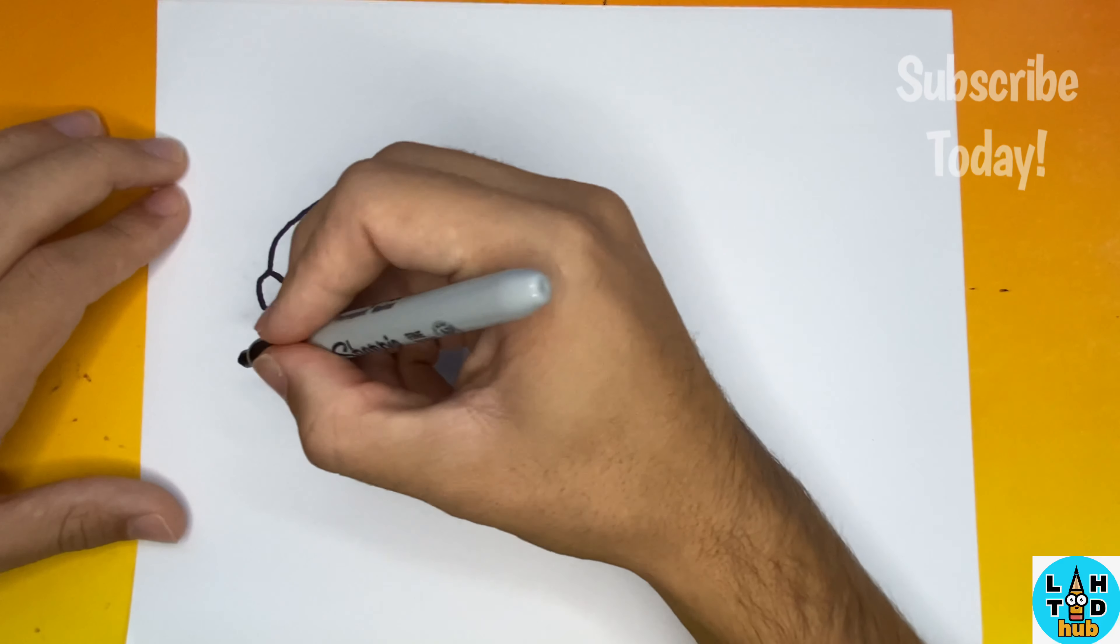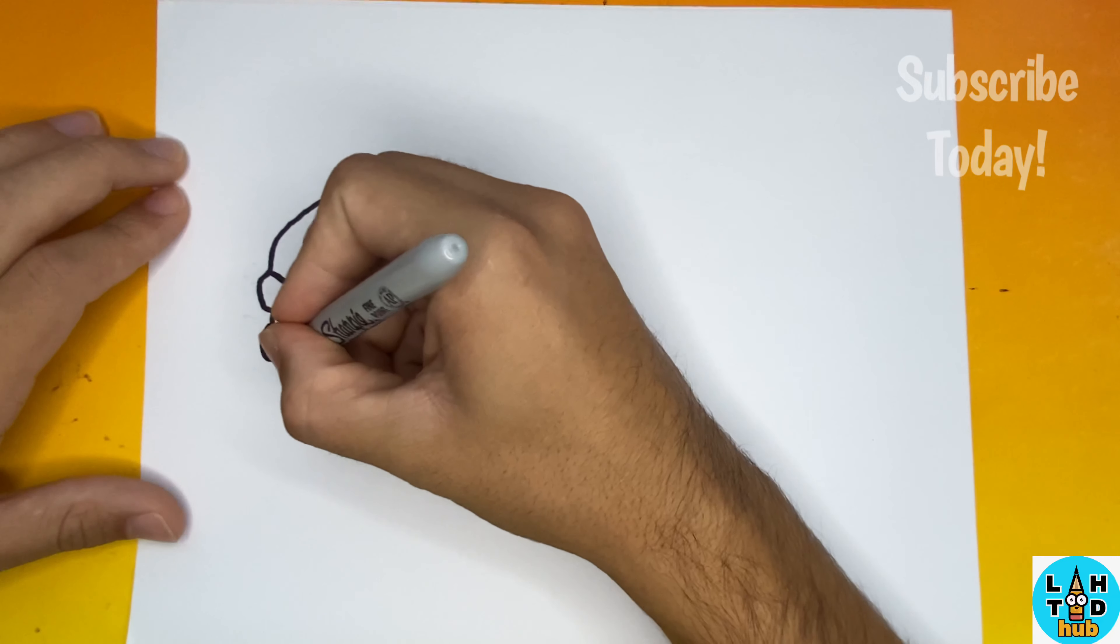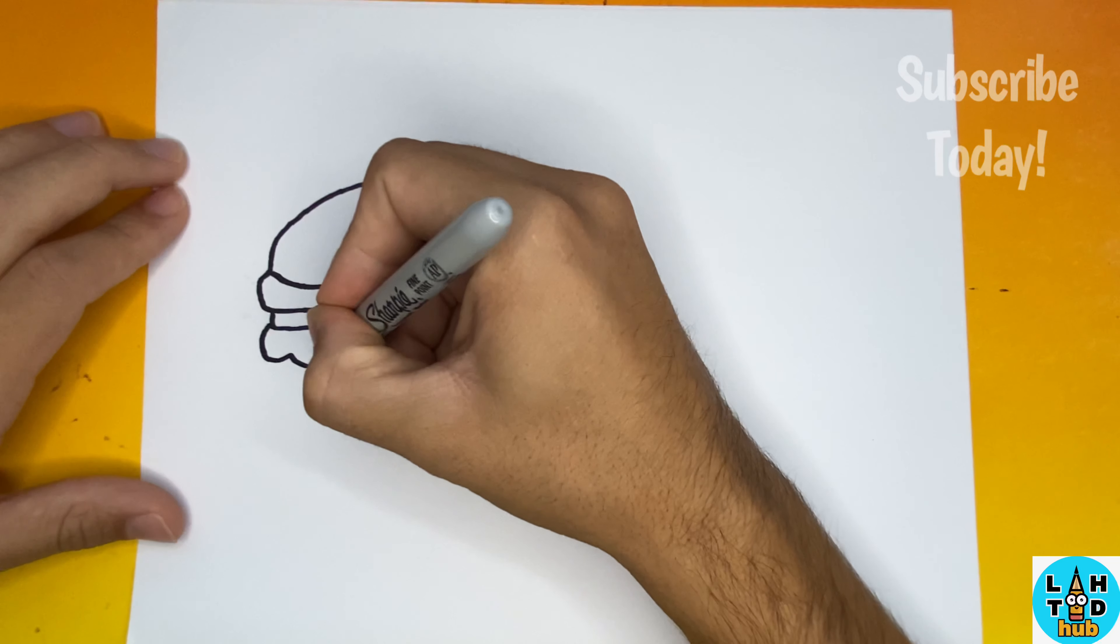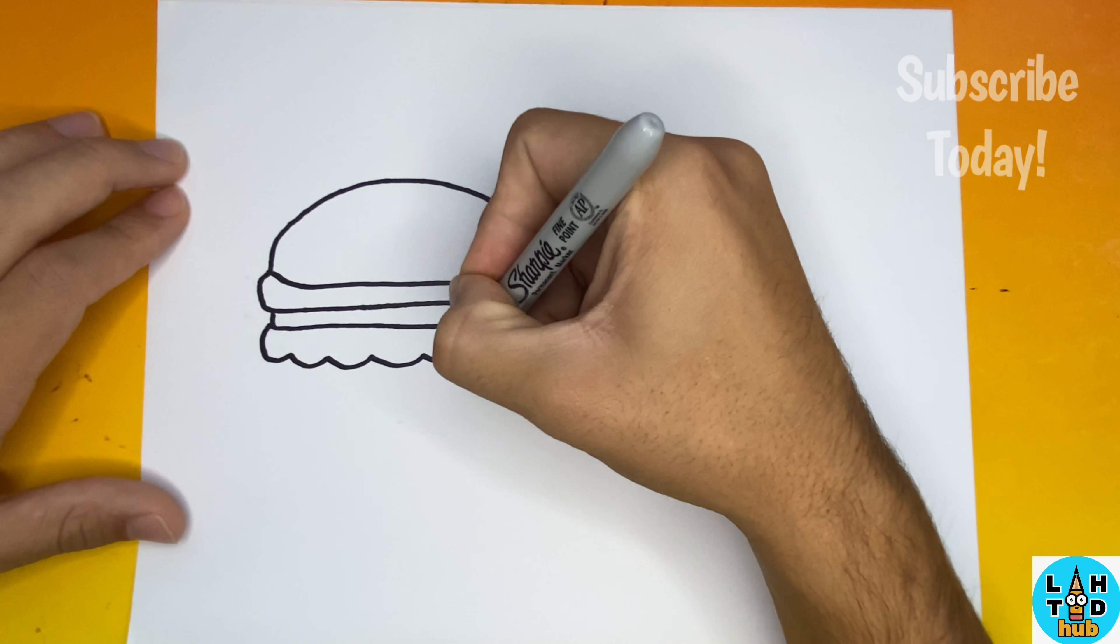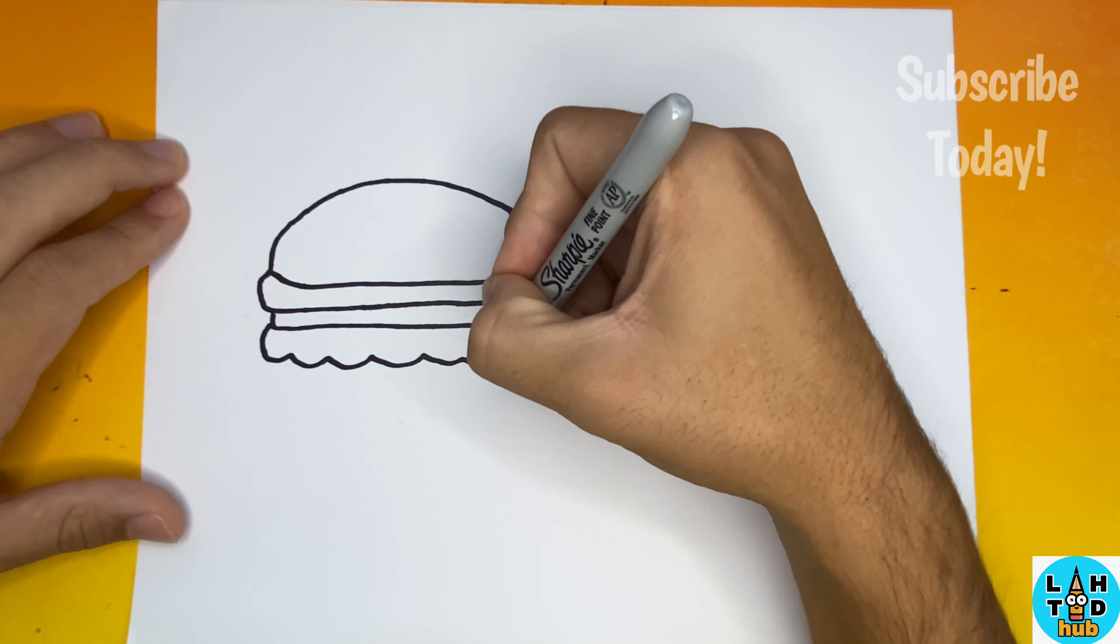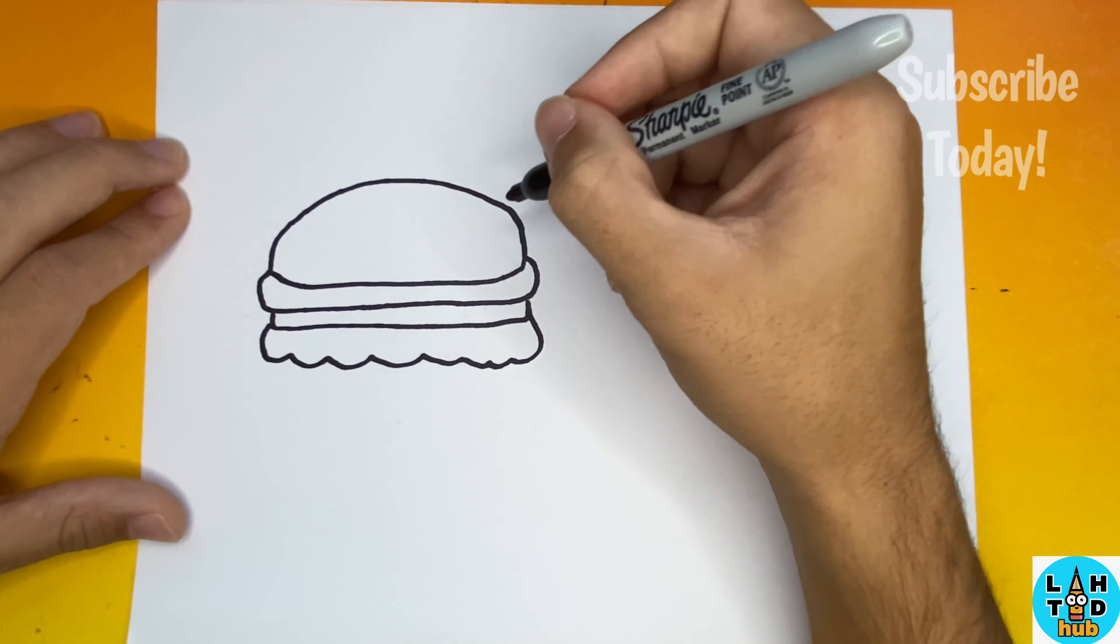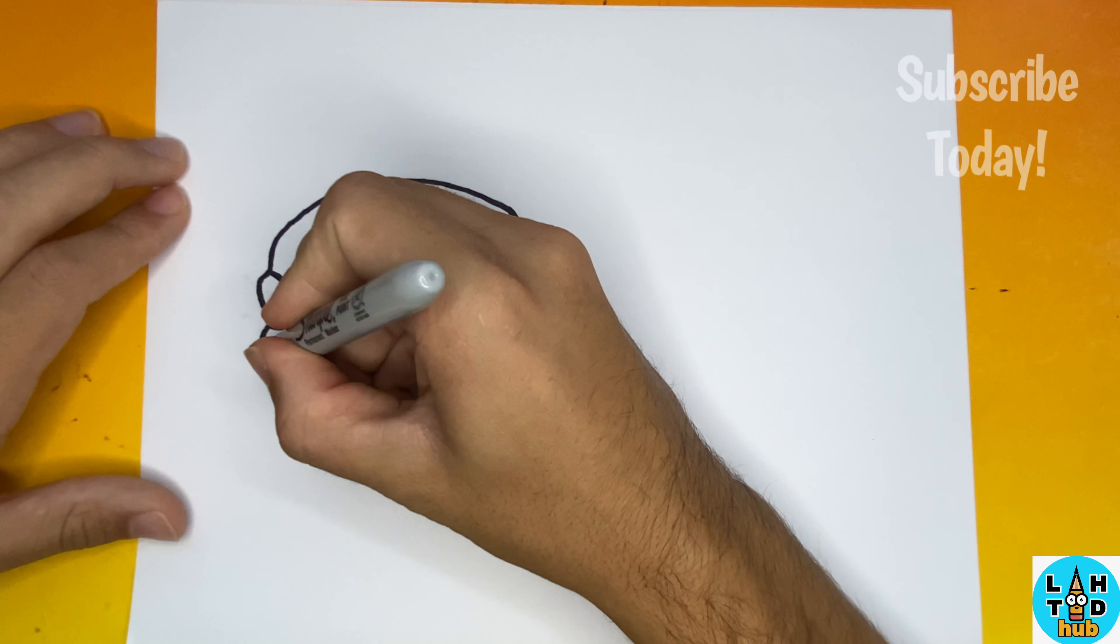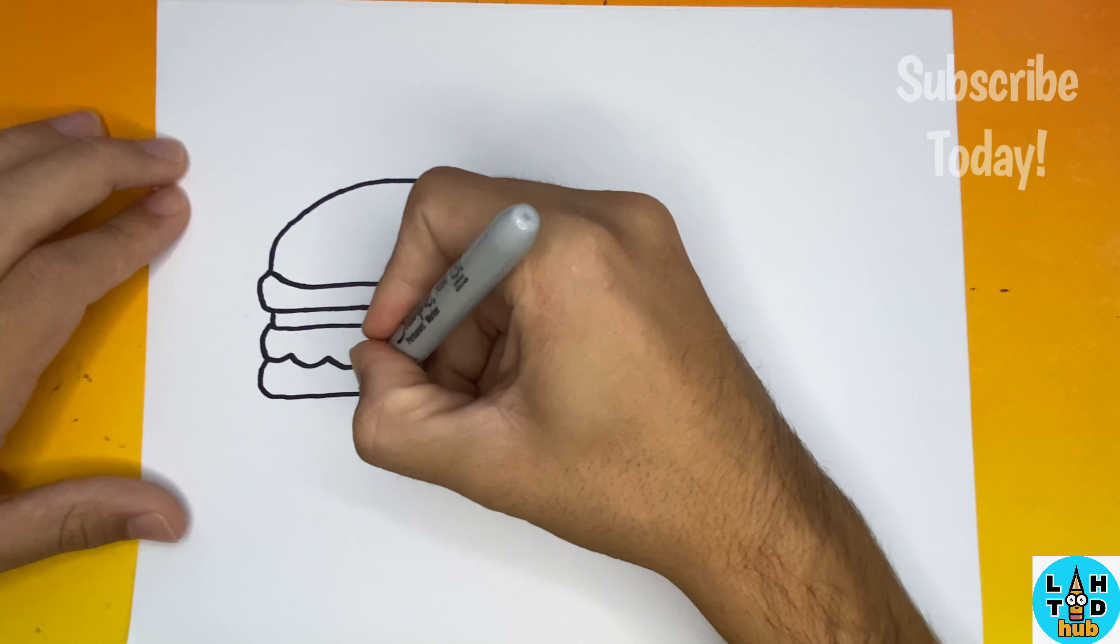Now underneath the cheese that we just made, let's go ahead and add some lettuce. So what does every single hamburger have? It has a hamburger patty of course, right? Now we're going to add a hamburger patty underneath our lettuce.